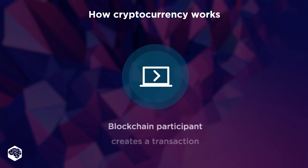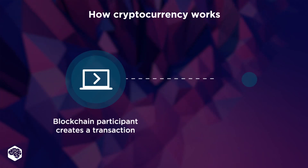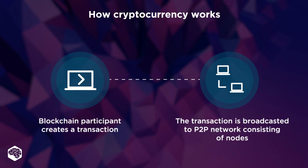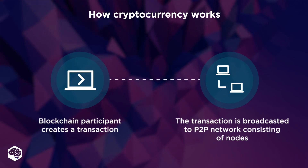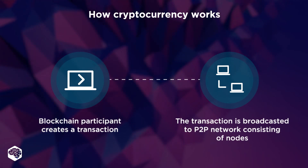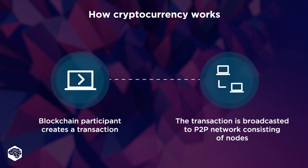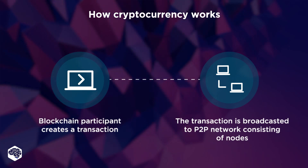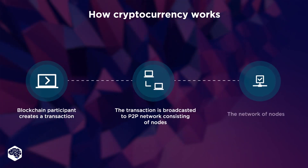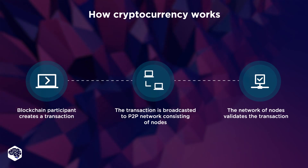Step 1: A blockchain participant creates a transaction. Step 2: This transaction is broadcasted to a P2P network consisting of nodes. A node is a computer responsible for creating blocks and adding them to the blockchain. Step 3: Then the network of nodes validates the transaction.